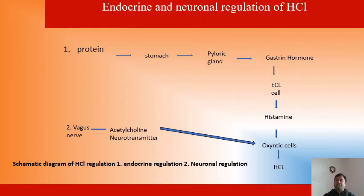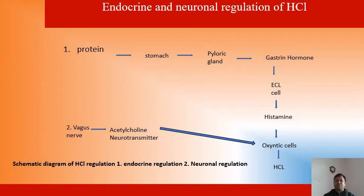The first mechanism is endocrinal regulation, which we have already discussed. The second is neuronal regulation. In neuronal regulation, the vagus nerve — the 10th cranial nerve — secretes acetylcholine, an excitatory neurotransmitter, which stimulates the oxyntic cells. These oxyntic cells release hydrochloric acid. In this way we can regulate the hormonal and neuronal regulation of HCl.